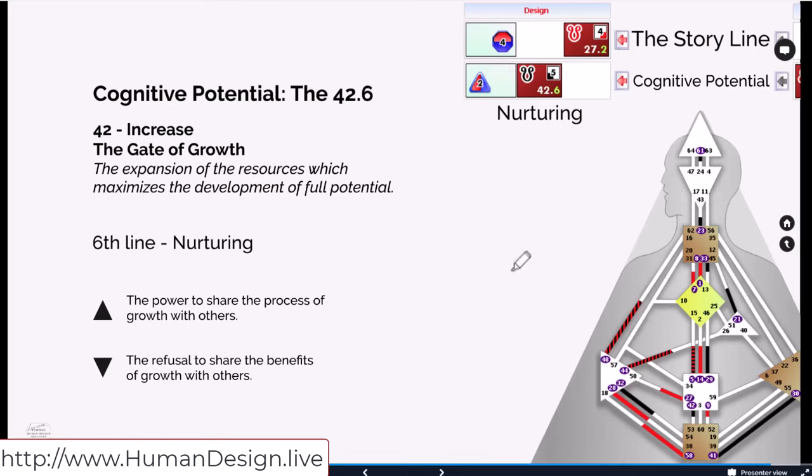So the 42 says, the expansion of the resources, which maximizes the development of full potential. And here is the underlying cognitive potential in this active environment because it's left, which is not highly populated. We have a second line environment. Here's the gift of being able to guide growth and finishing cycles of experience. And that gift is going to be determined by the expansion of the resources, which maximizes the development of full potential.